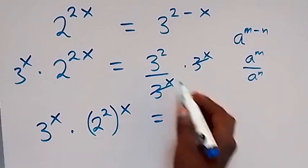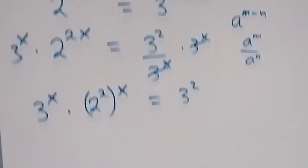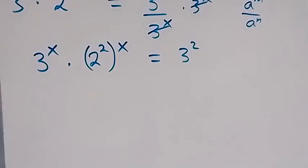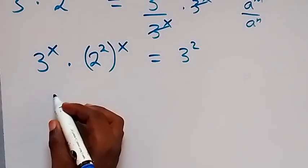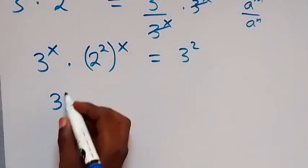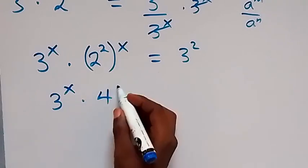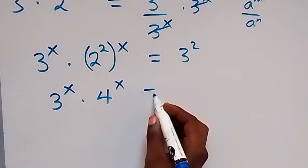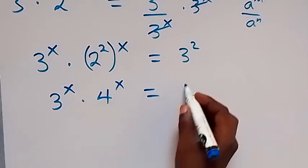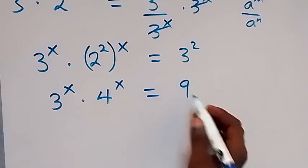Which equals 3 squared. In the next term, 2 squared is the same as 4, so we have 3 raised to power x times 4 raised to power x equals 3 squared, which is 3 times 3, and that's 9.